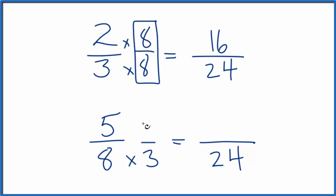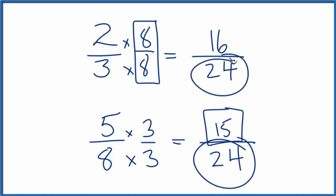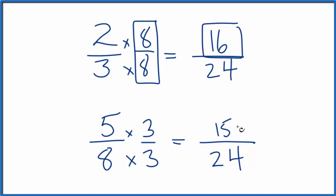Down here, multiply by 3 over 3. 5 times 3 is 15. 15 over 24, that's the same as 5 eighths. But now we have the same denominator, and we can compare the numerators. So 16, that's larger than 15, and that means that 2 thirds is larger than 5 eighths.